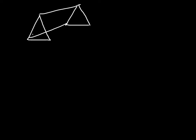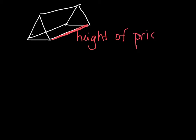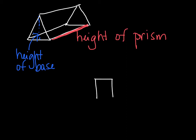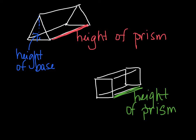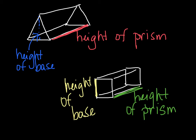This is going to be a triangular prism. The distance between the triangular bases — that would be the height of the triangular prism. Whereas this other distance would be the height of the base. Here is a rectangular prism. This would be the height of the prism, and then this would be the height of the base. Do you see the difference? We're talking about the entire figure versus just the base.